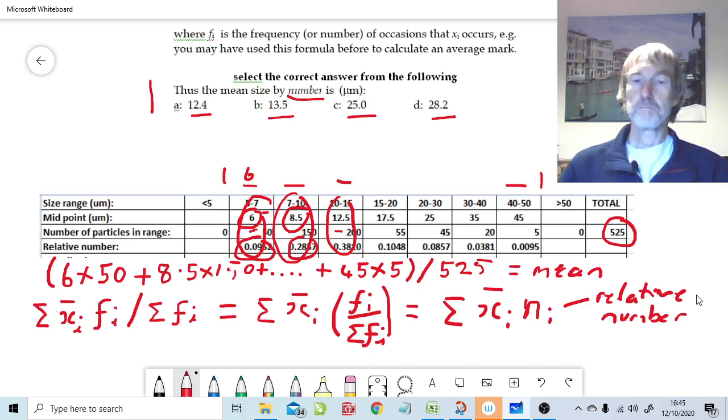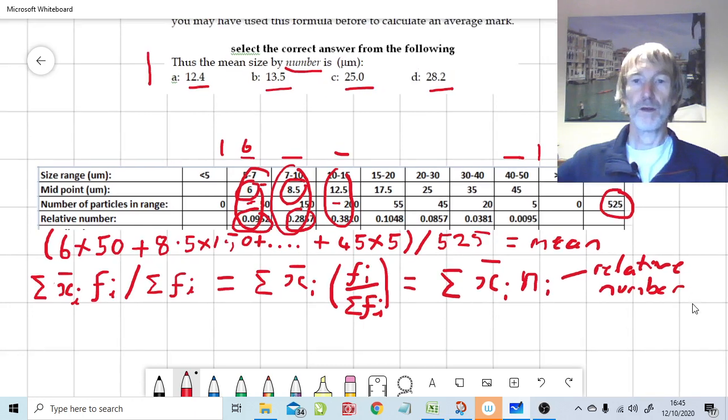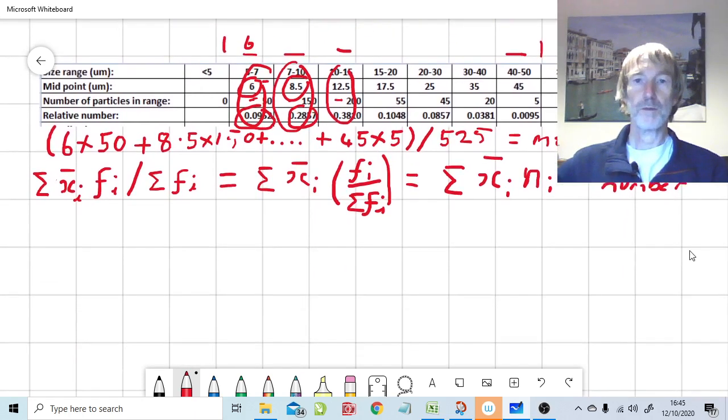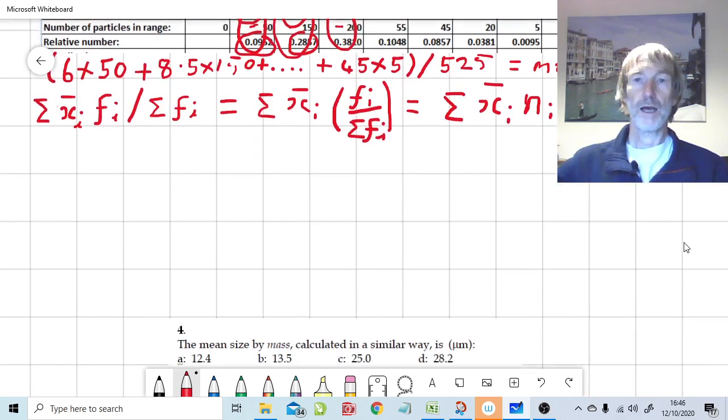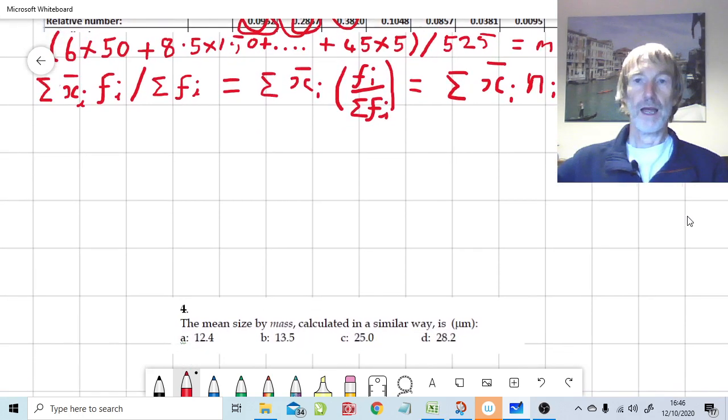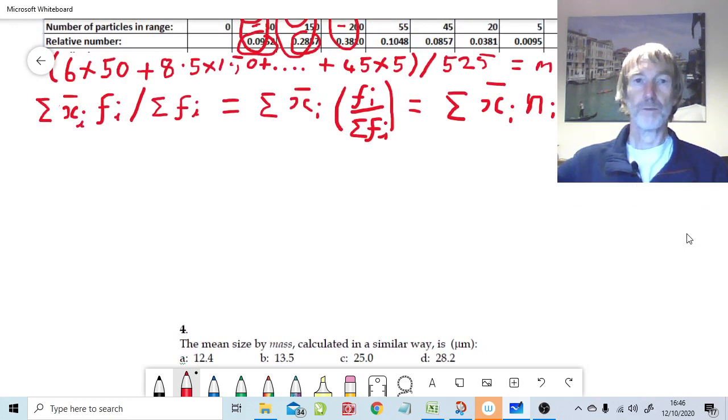Is this a better way of doing it? I would argue yes, but there isn't a great deal in it, until we come to calculate the mean by mass. Because when you have the mean by mass, we have a little bit more of a problem. But we can do the same sort of calculation. Mean by mass.